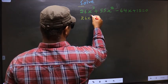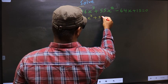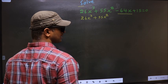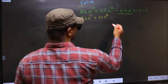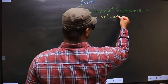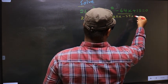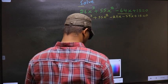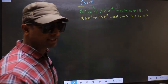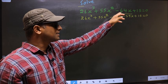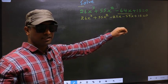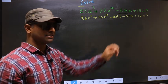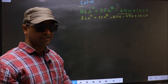26x cubed plus 55x squared — in place of minus 64x, now I write minus 25x minus 39x plus 15 equal to 0. In place of minus 64x, I have written minus 25x minus 39x.